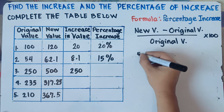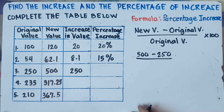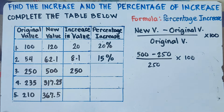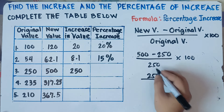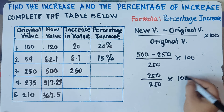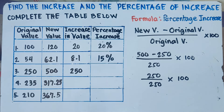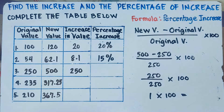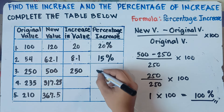New value 500 minus original value 250, divided by original value 250, times 100. So 500 minus 250 is 250, divided by 250 is 1, and 1 times 100 is 100%. So for number three, the answer is 100%.